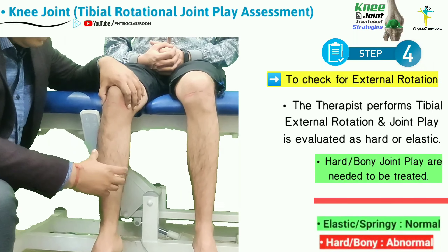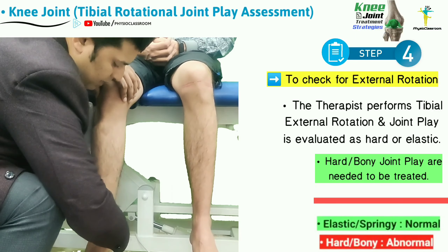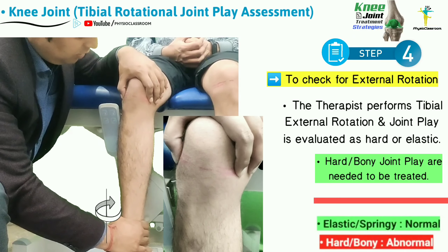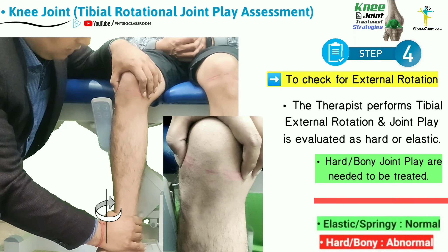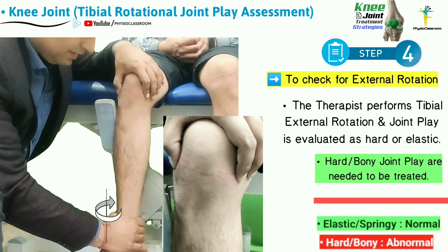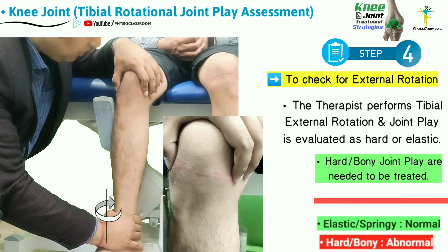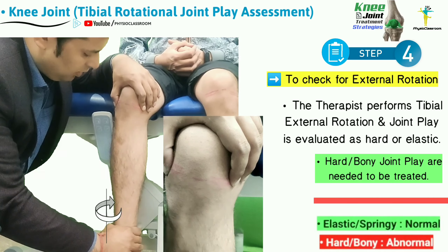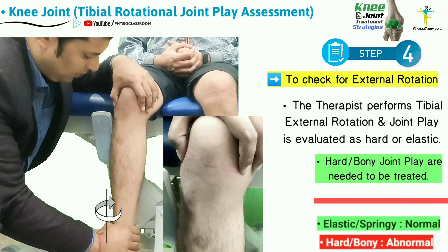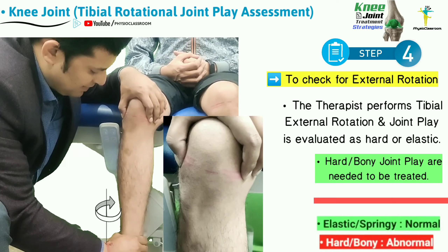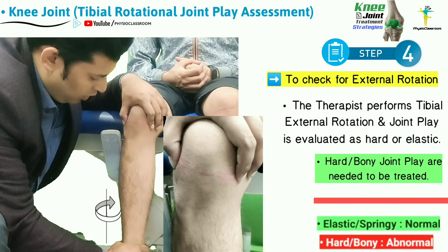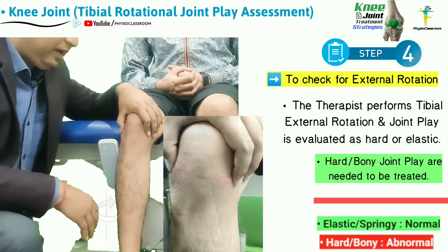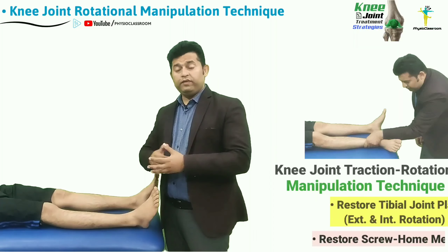Similarly, to assess for external rotation joint play, the tibia is taken into external rotation. After all the slack has been taken up, further force is added to assess for the external rotation joint play, which is again assessed as springy or hard. Hard end-feels indicate treatment is needed.